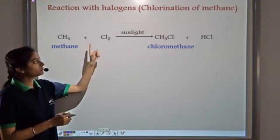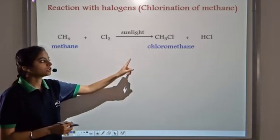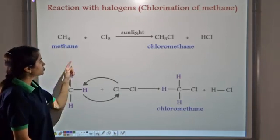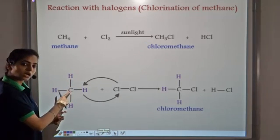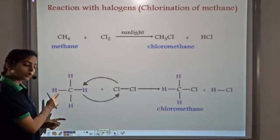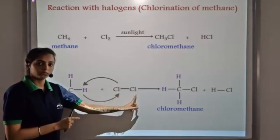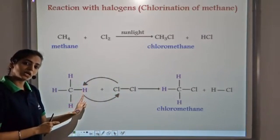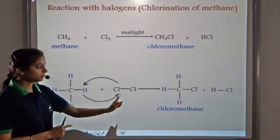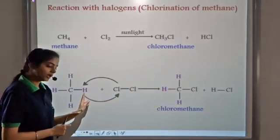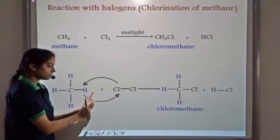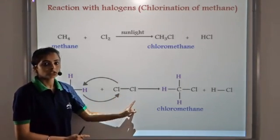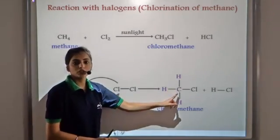If we have methane, when it reacts with chlorine in the presence of sunlight, it forms chloromethane plus hydrogen chloride. One Cl atom replaces one hydrogen atom and takes its place. The three remaining hydrogen atoms stay in place, one hydrogen atom is replaced by chlorine, and this hydrogen goes and forms HCl. This is how alkanes give substitution reactions.